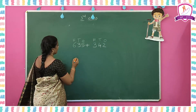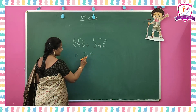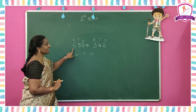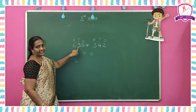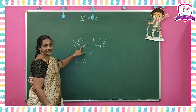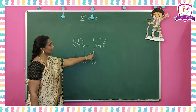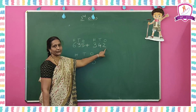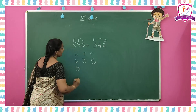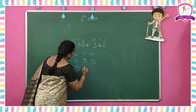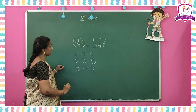Write these two numbers in columns — hundreds, tens, ones. In 635, how many hundreds? 6 hundreds, so write 6 in hundreds place. How many tens? 3 tens, so write 3 in tens place. How many ones? 5 ones, so write 5 in ones place. In 342, how many hundreds? 3 hundreds, so write 3 in hundreds place. How many tens? 4 tens. And how many ones? 2 ones — write 2 in ones place.